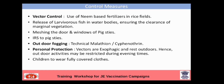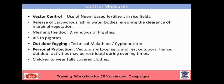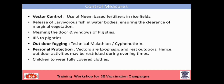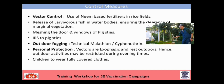Control measures of Japanese Encephalitis must act at three levels. Japanese Encephalitis is a vector-borne zoonotic disease — the vector is the mosquito, the amplifying host is the pig, and the dead-end host is human beings. For vector control: use neem-based fertilizer in rice fields where there is stagnation of water, which is the breeding site of mosquitoes. Release larvae-eating fish in water bodies and ensure clearance of marginal vegetation. Mesh the doors and windows of pig sties — the places where pigs are bred — to prevent mosquito bites to pigs. Also apply indoor residual spraying in pig sties.